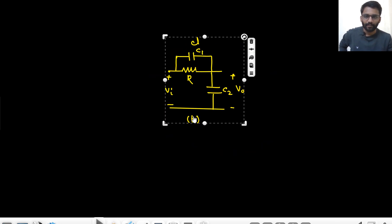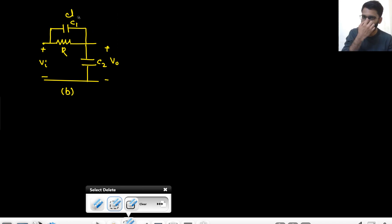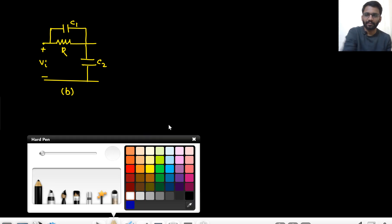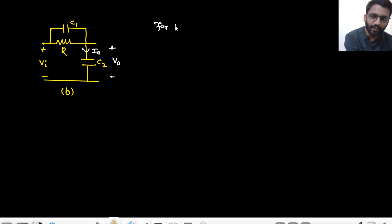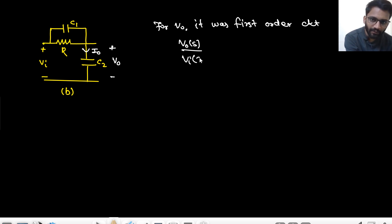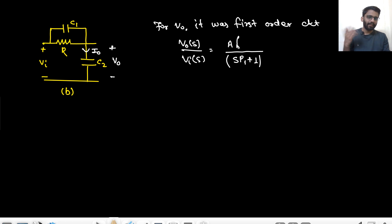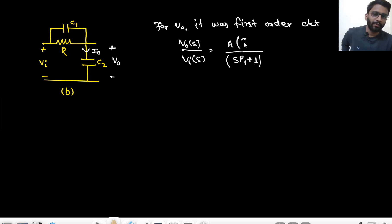Now the third example is the same circuit but you are collecting the output as current I_out instead of voltage. For voltage V_out it was a first-order circuit, meaning V_out(s)/V_in(s) would have one pole. There could be a zero at a finite value or at infinity, but looking at the circuit there would be a zero at minus 1/(RC). I'll just assume there is one zero at some finite value.